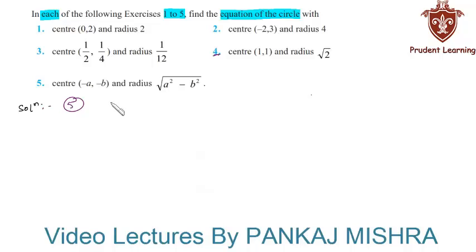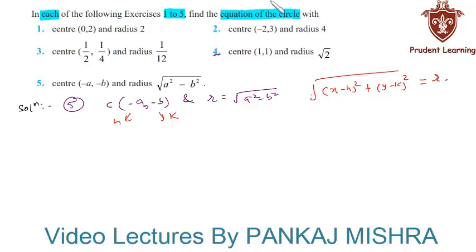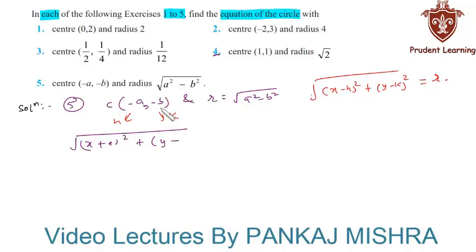In the fifth question, the coordinates of center are minus a comma minus b and radius is the square root of a square minus b square. So h equal to minus a and k equal to minus b. The equation of a circle with center h comma k and radius r is given by the square root of (x minus h) whole square plus (y minus k) whole square equal to r. Substituting the given values, we have the square root of (x plus a) whole square plus (y plus b) whole square equal to the square root of a square minus b square.